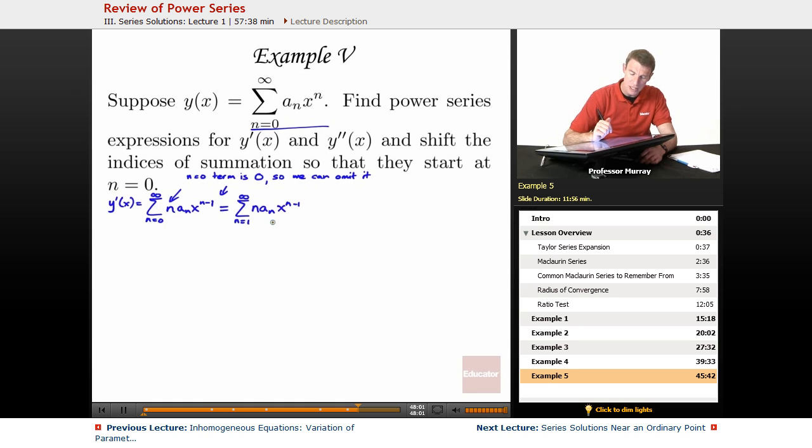It says something about shifting the indices of summation so that they start at n equals 0. I want to show you what I mean by that. If I expand out this series, I'm going to start out with n equals 1, and I'll get a sub 1. x to the 0 is just 1, so I won't put anything there. That was from n equals 1 term. The n equals 2 term gives me 2a sub 2 times x to the 1. n equals 3 term gives me 3a3 times x squared, and so on.